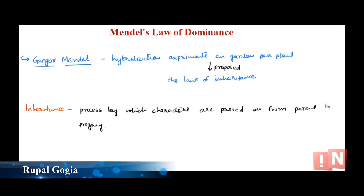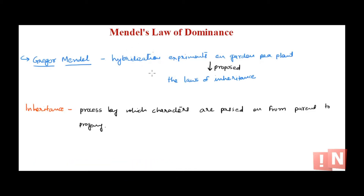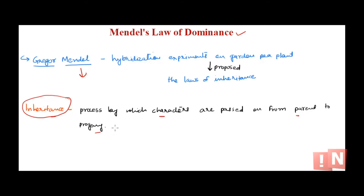Welcome back. Today we are starting with one of the very basic and important topics of genetics — Laws of Inheritance. There are three laws of inheritance given by Gregor Mendel, father of genetics: the Law of Dominance, Law of Segregation, and Law of Independent Assortment. Today we are starting with the Law of Dominance. Inheritance is the process by which characters or genes are passed from one generation to the other, from parent to progeny.